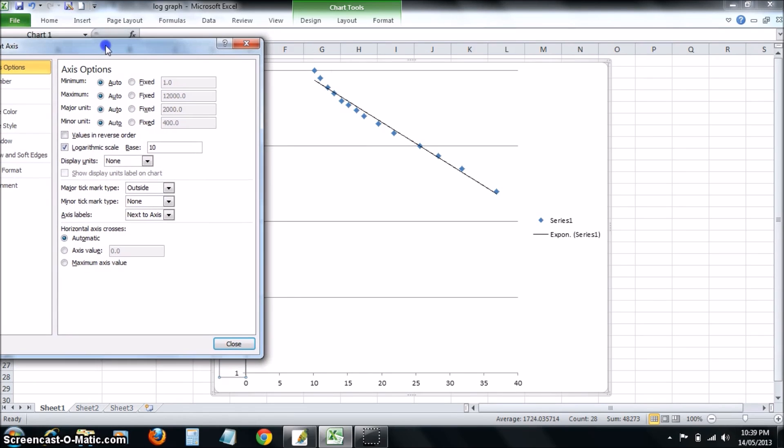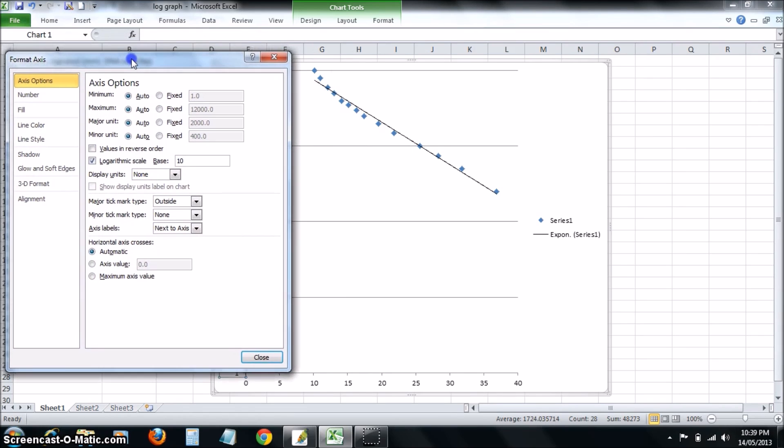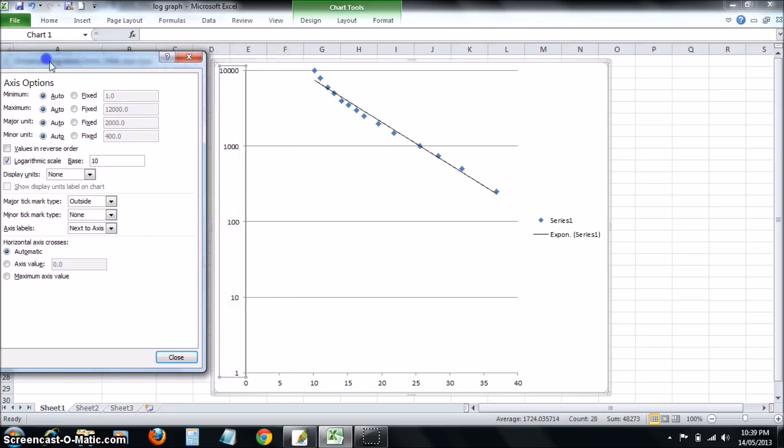Notice now that the data points have converted to pretty much a straight line. You'll also notice that there might be quite a bit of unused space here.